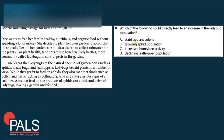Question 8: Which of the following could directly lead to an increase in the ladybug population? A) a stabilized ant colony, B) growing aphid population, C) increased honeybee activity, D) declining leafhopper population.